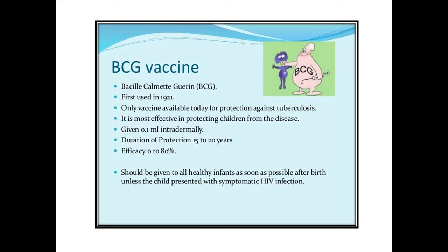BCG vaccine is very effective and it is the only vaccine available today for protection against tuberculosis. It is most effective in protecting children from the disease, given 0.1 ml intradermally. The duration of protection is around 15 to 20 years. Efficacy can be 0% to 80%. In India, it is a part of the Universal Immunization Program, given to all healthy infants as soon as possible after birth, unless the child presents with symptomatic HIV infection.